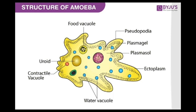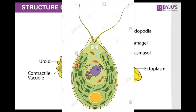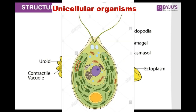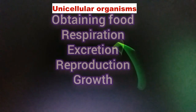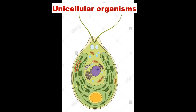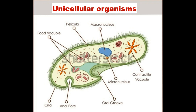All of these are single-celled organisms — unicellular microorganisms. These unicellular organisms are capable of performing all the life processes like obtaining food, respiration, excretion, growth, and reproduction. In a unicellular organism, a single cell performs all body functions.